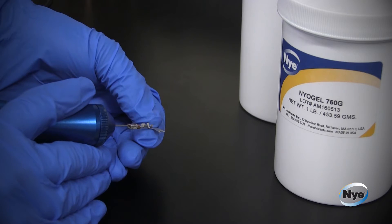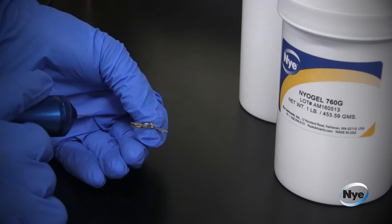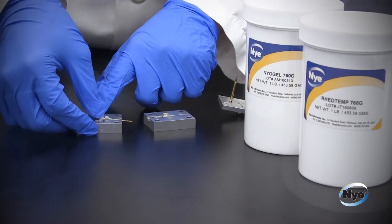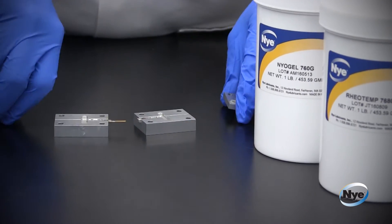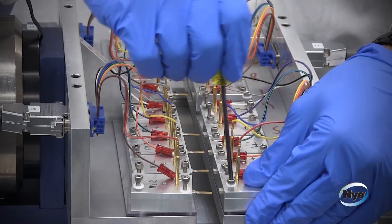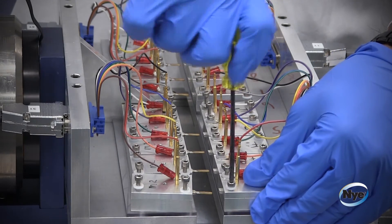A contact lubricant provides a thin film that separates the moving surfaces and reduces the coefficient of friction while also sealing the contact surfaces and preventing oxidative wear particles from forming.